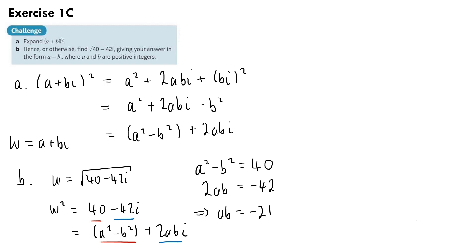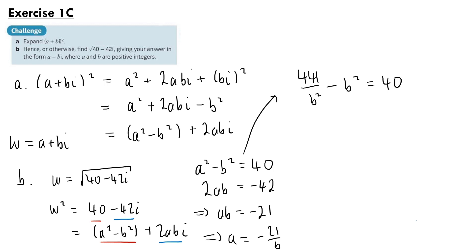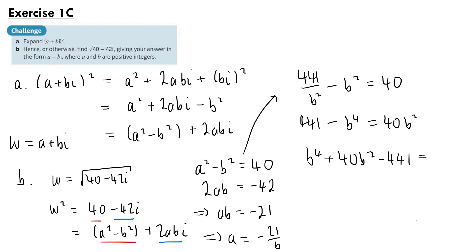Dividing both sides by b gives a equals minus 21 over b, and we substitute that back into the first equation. So a squared, which is (minus 21 over b) squared, gives 441 over b squared minus b squared equals 40. Multiplying all terms by b squared to clear the fraction gives 441 minus b to the power 4 equals 40b squared. Taking all terms to one side: b to the power 4 plus 40b squared minus 441 equals 0.